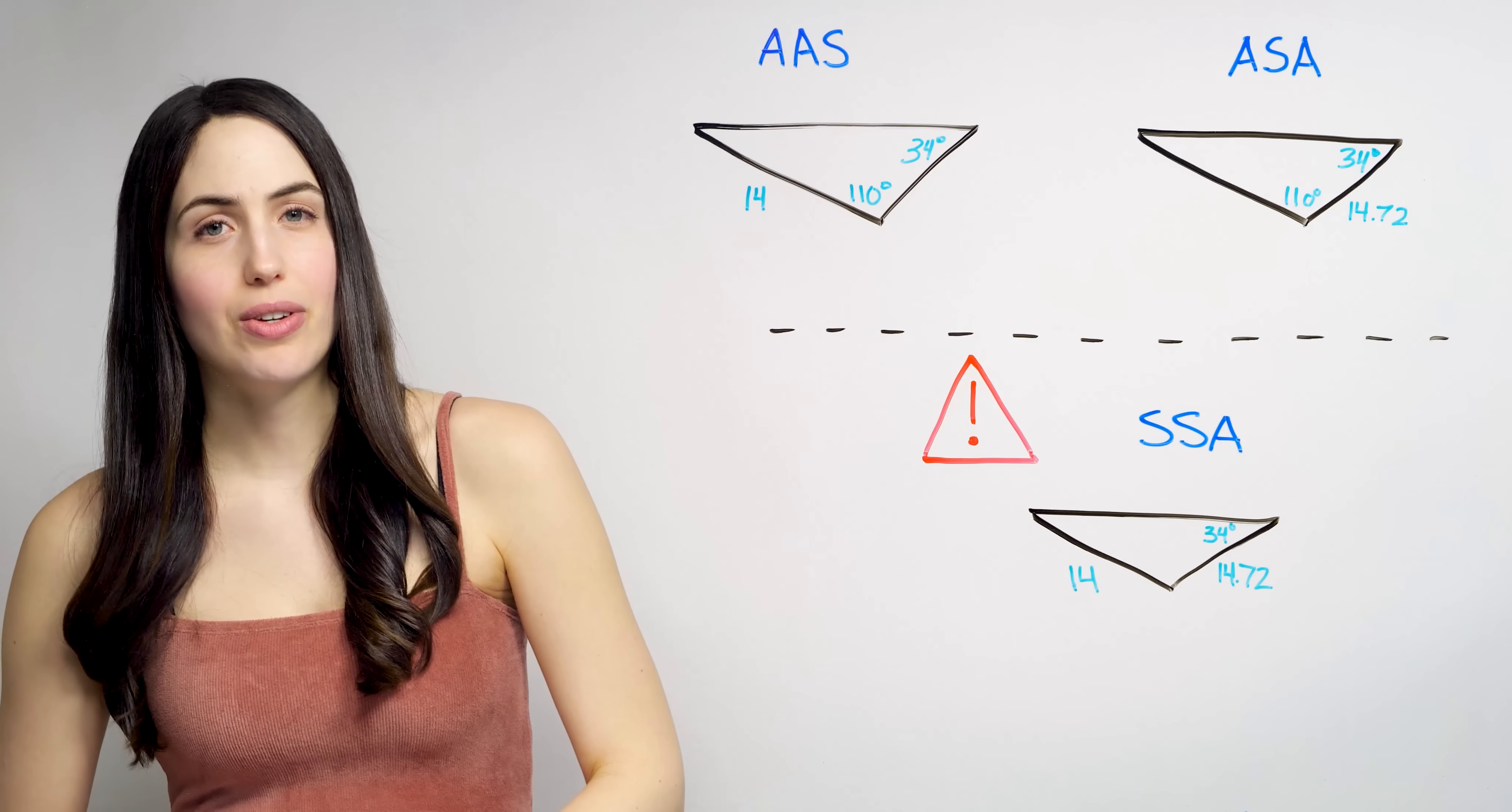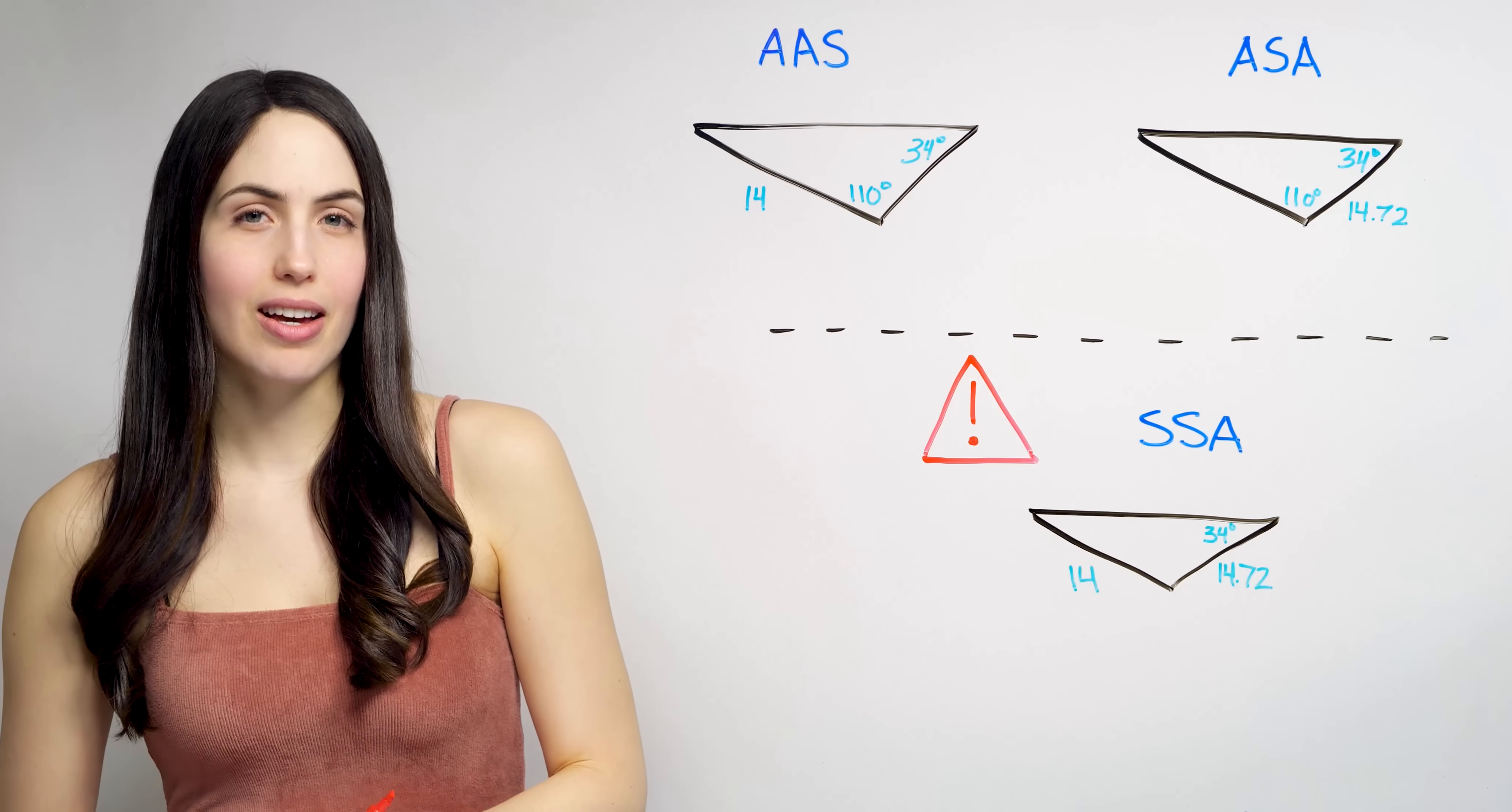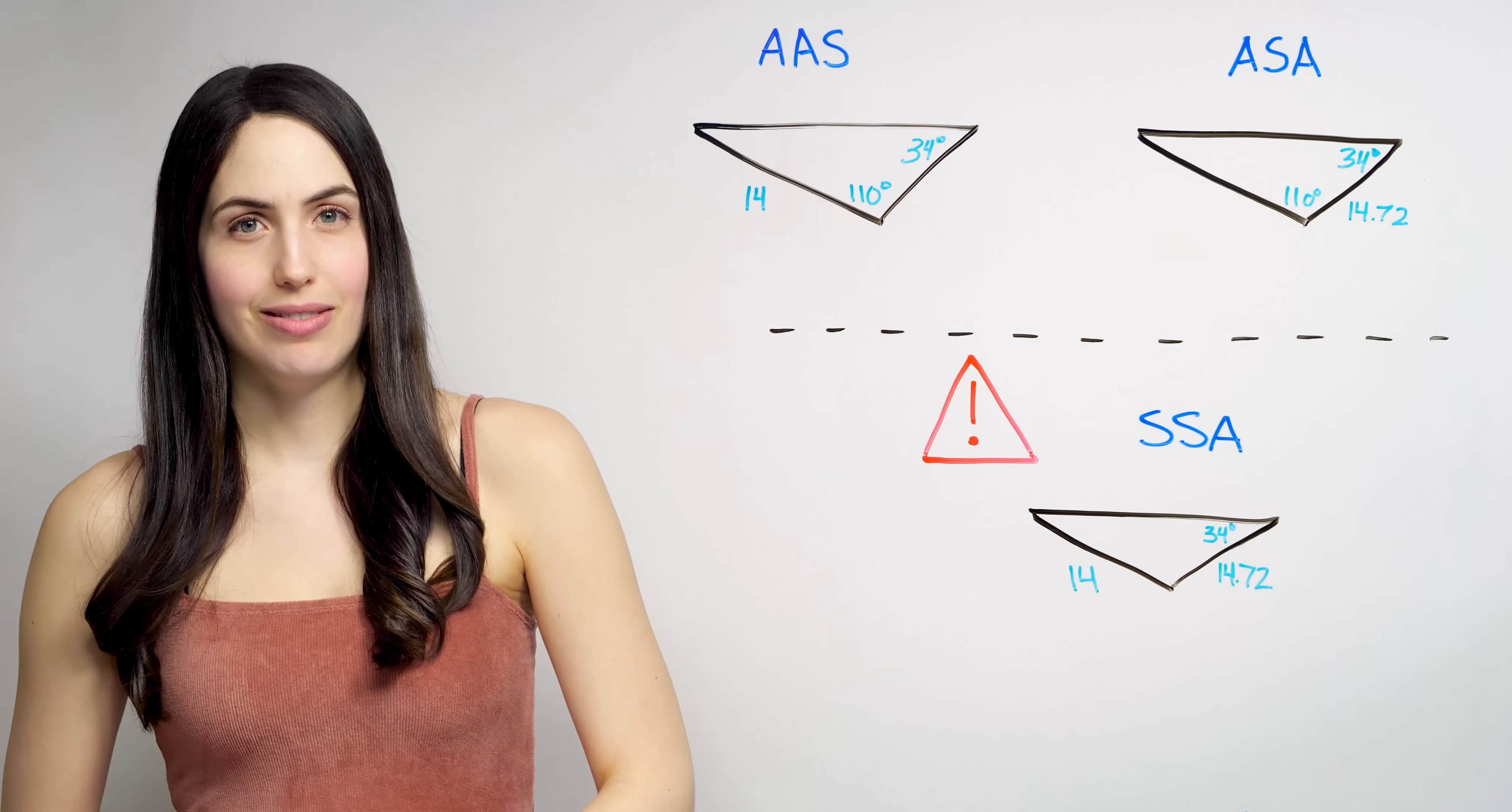First, use the fact that there's 180 degrees in a triangle to find the missing angle. But then use the law of sines to find the missing sides. And there will be one solution, one answer for your triangle.